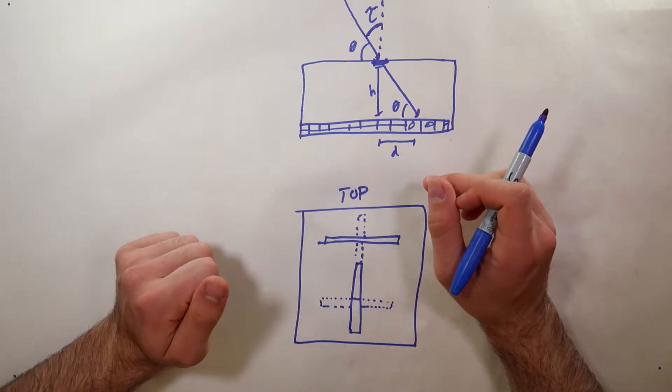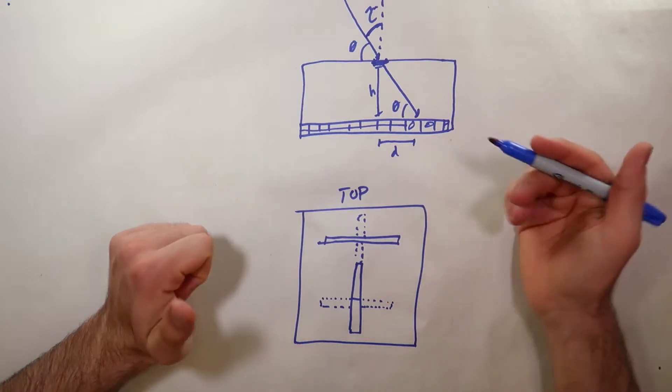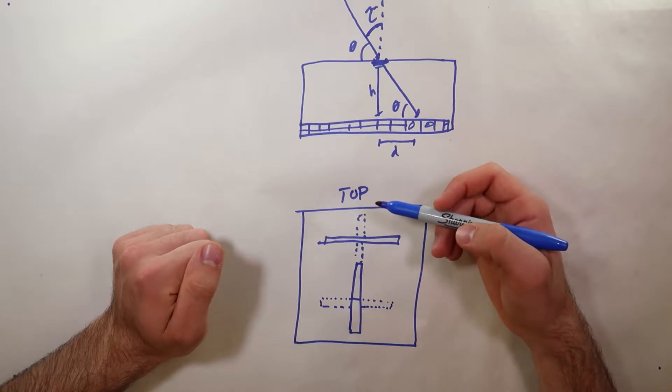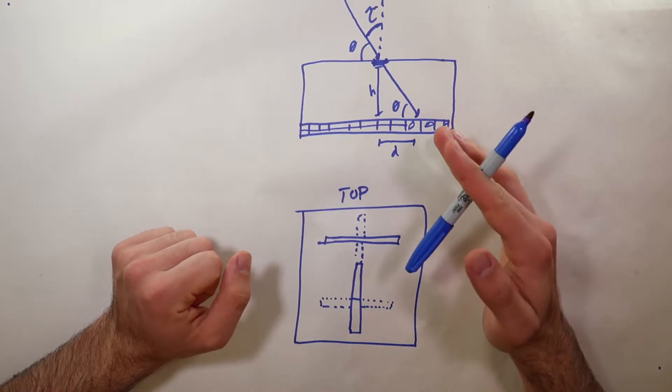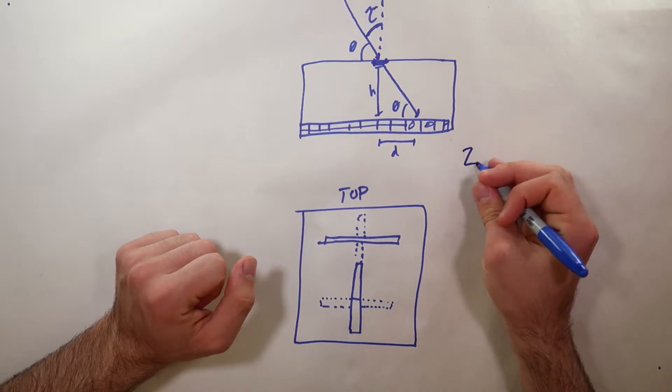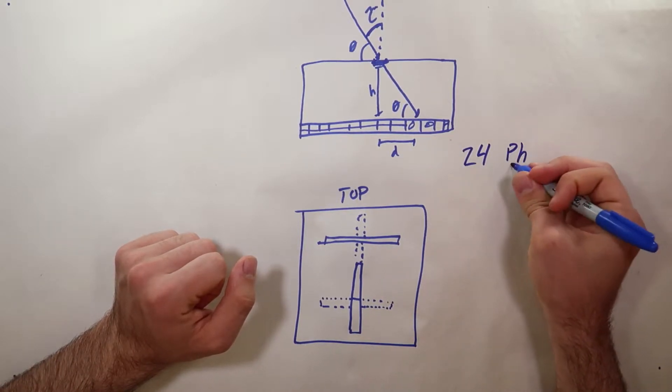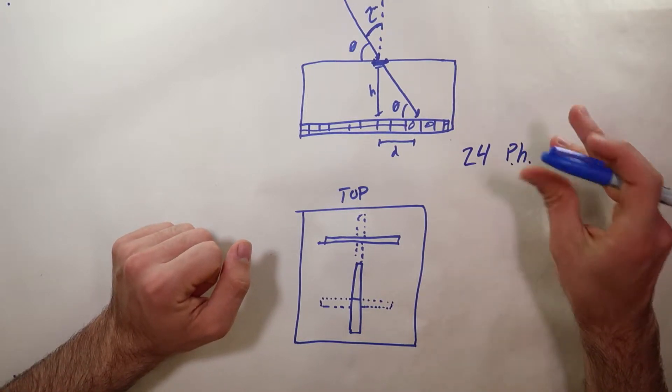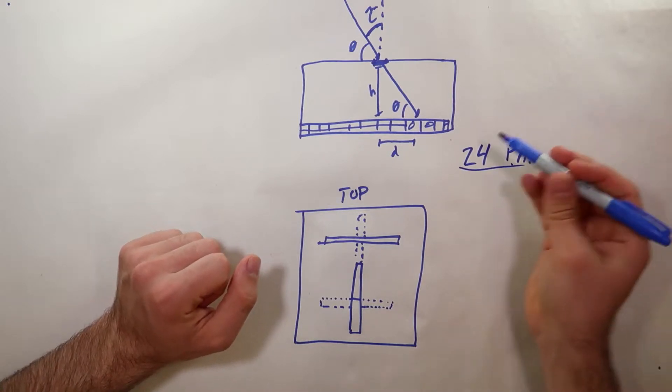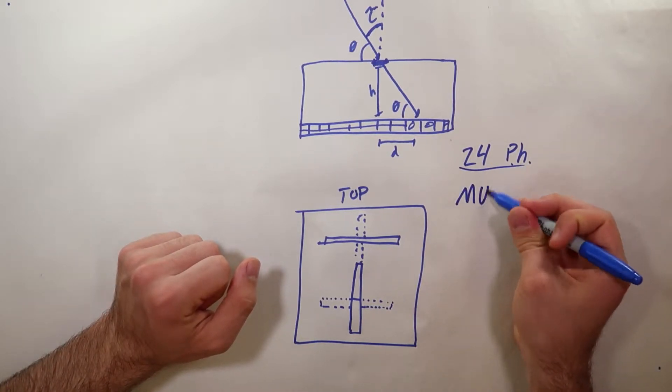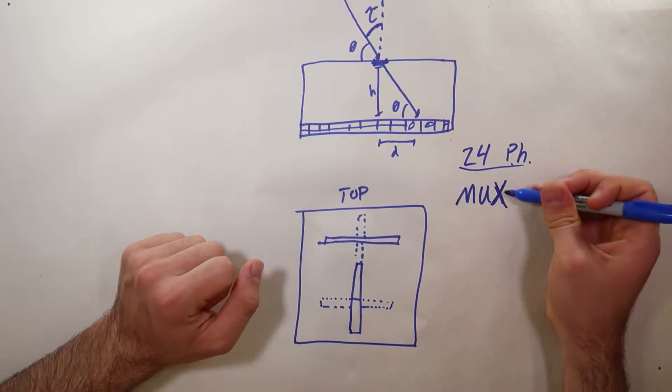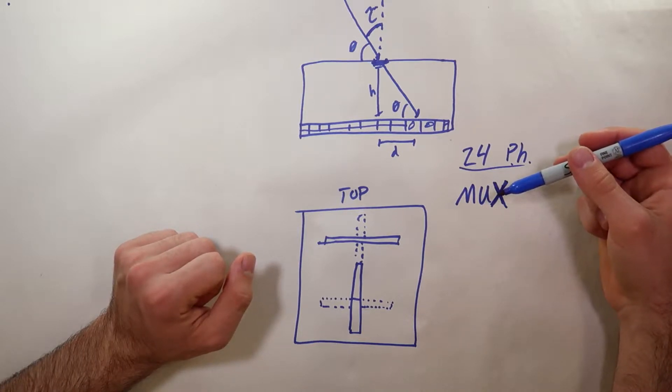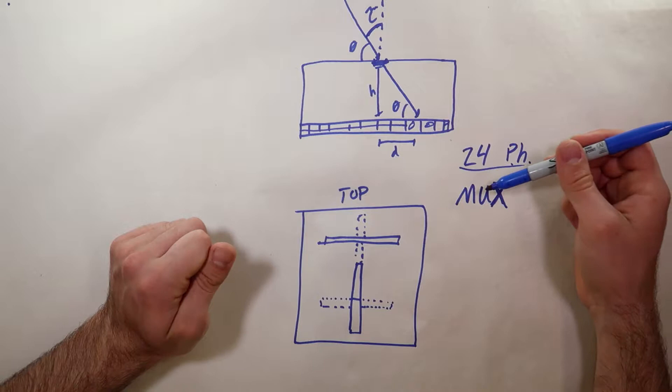As part of the previous lab we used photoresistors and had to record the voltage from the output. This is going to be a little more tricky in this lab because we're using a total of 24 photoresistors. The Arduino Nano doesn't have that many ports to read the output from 24 photoresistors, so we're going to have to use something called a mux.